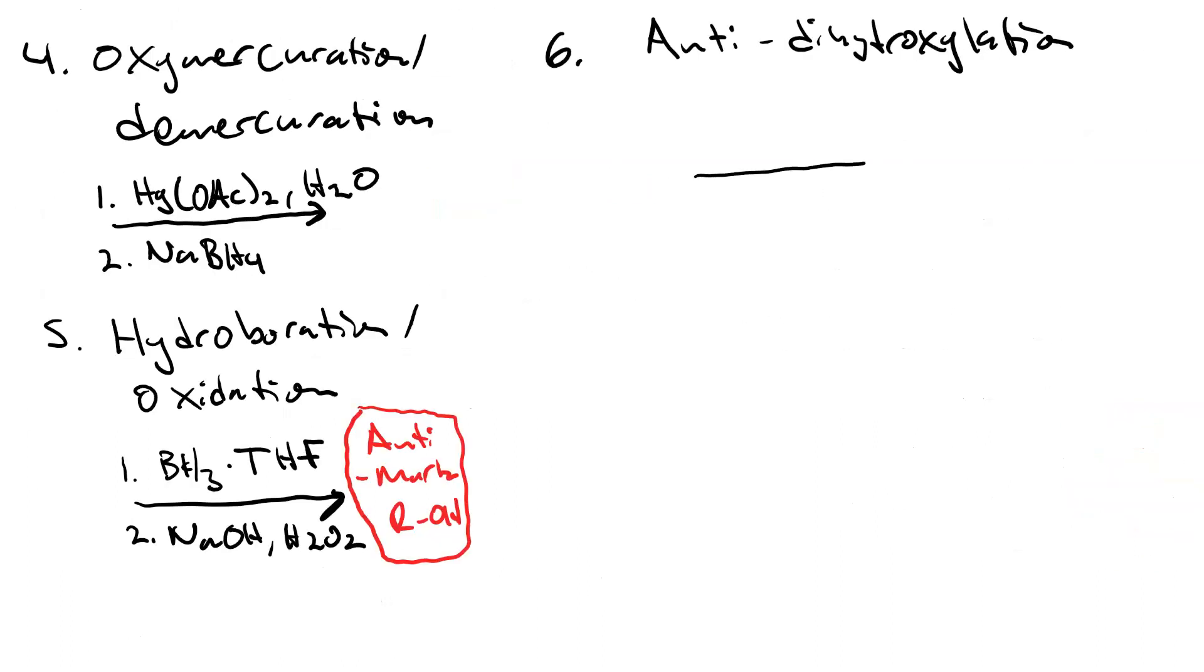You can get anti-dihydroxylation with MCPBA or peroxyacetic acid, or you can go through a halohydrin, so Br2H2O followed by NaOH.